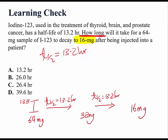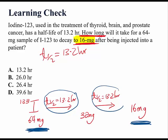How long will it take us to go from 64 mg to 16 mg of iodine-123? That should simply be the addition of the two half-lives, which should be 26.4 hours. So, the answer here is C.